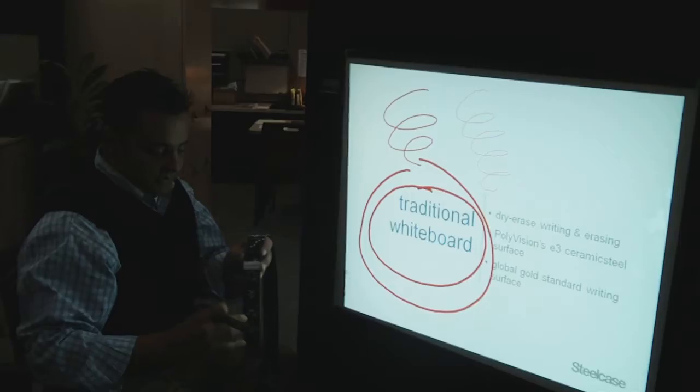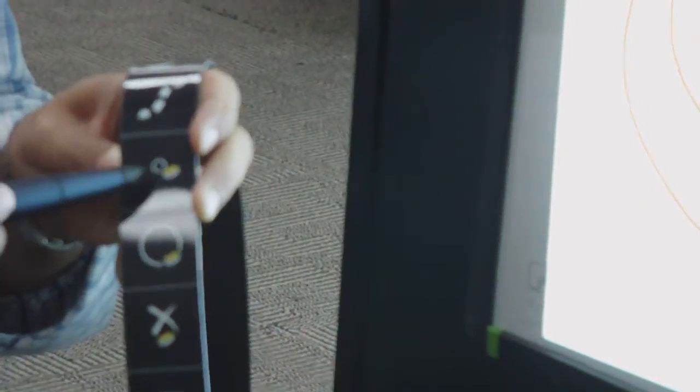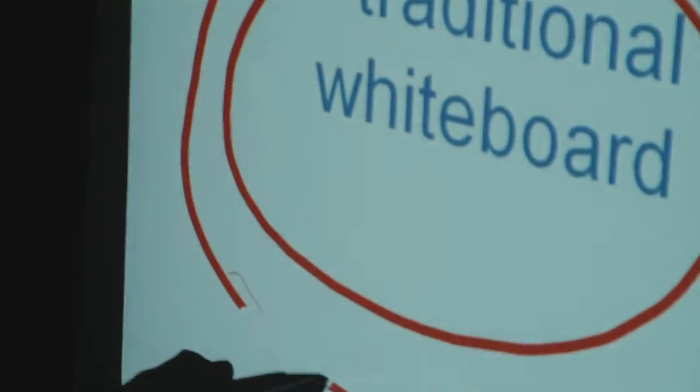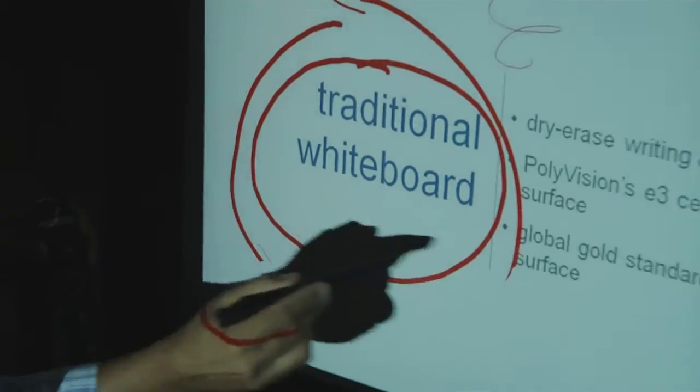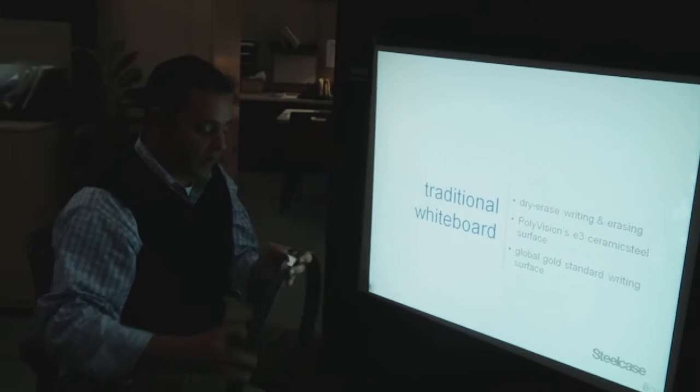And then on the command strip, there's a small eraser, large eraser, or erase all. So with the small eraser, I can erase very fine portions of what I drew, or just hit erase all and it'll go away.